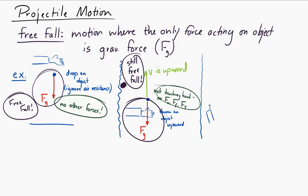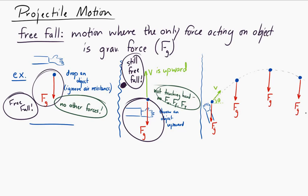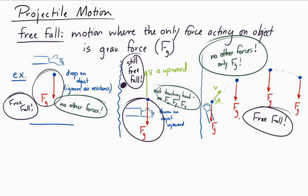Let's look at a third example. Say you throw an object at an angle above the horizontal, like throwing a baseball. After it leaves your hand and before it hits anything — as long as we ignore air resistance — nothing acts on the ball except gravitational force. There's no normal force, no tension, no friction. Therefore, this is also in freefall.